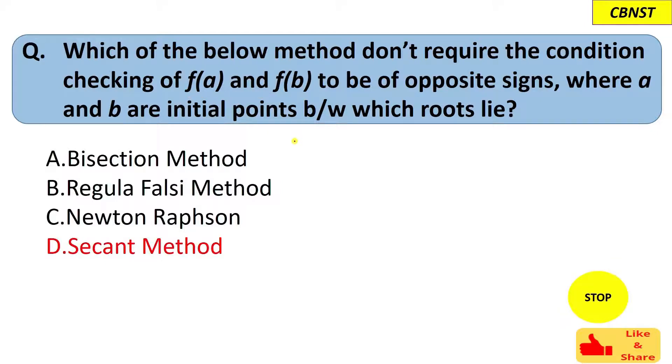So the correct answer is option D. That means secant method actually does not need this condition to be true.